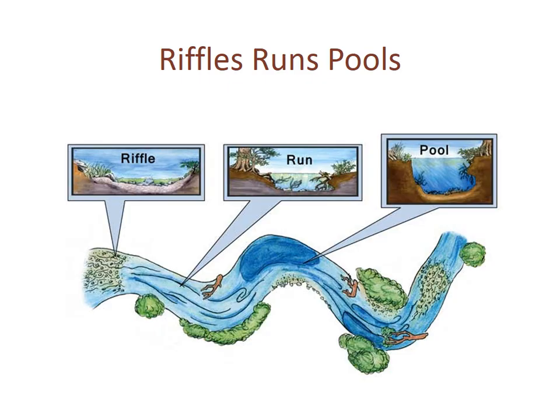A free-flowing stream will usually include a variety of features. Riffles are shallow, fast-moving areas where breaking water is visible on the surface. Runs are swift, and they can be shallow, but the surface is smooth and not breaking. Pools are deeper and much slower than runs. The sequence of riffles, runs, and pools is an important factor in the aquatic habitat, but they are also key energy-dissipating features.